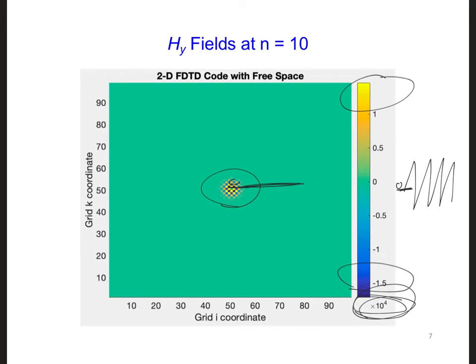This is zero. And these are also very large 10 to the fourth and minus 10 to the fourth values.